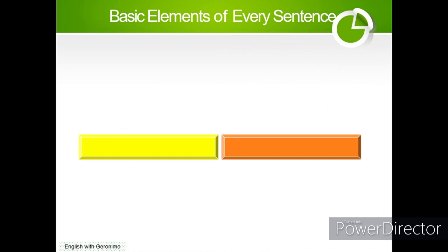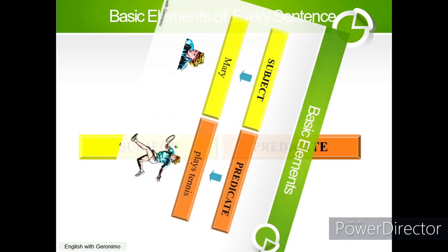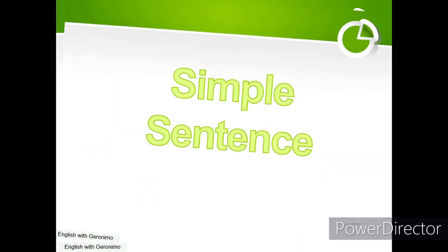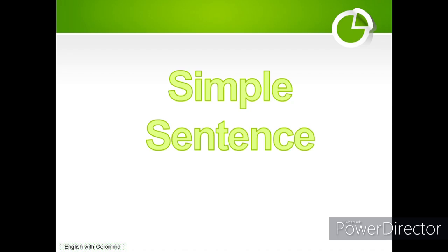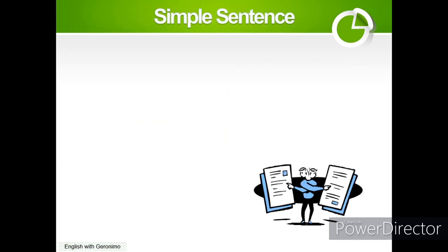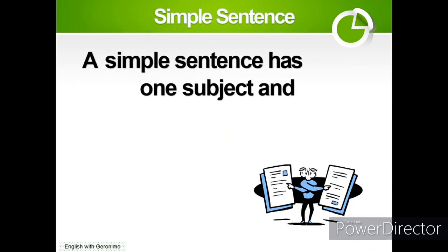There are basic elements of every sentence: a subject and a predicate to complete the sentence. The subject here is Mary, and our predicate is 'plays tennis.' So Mary plays tennis.